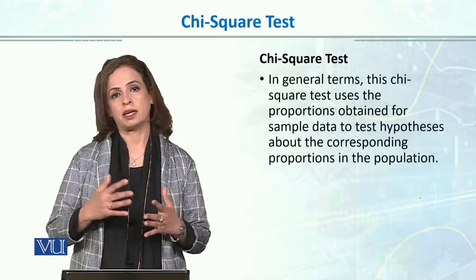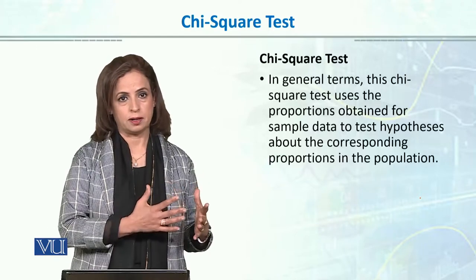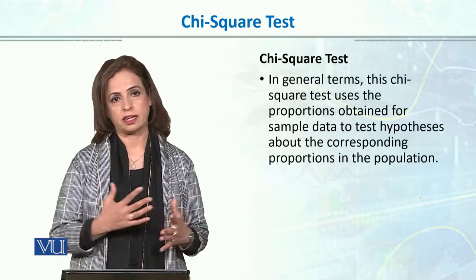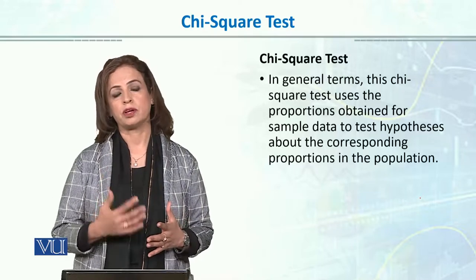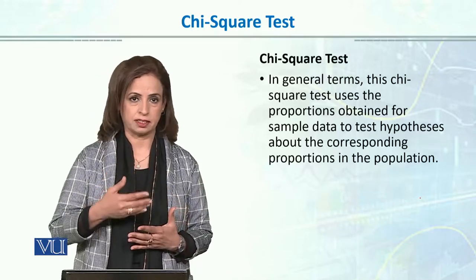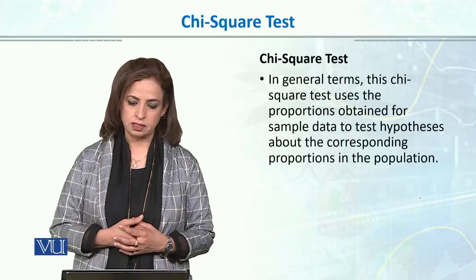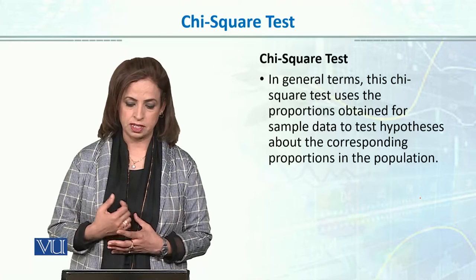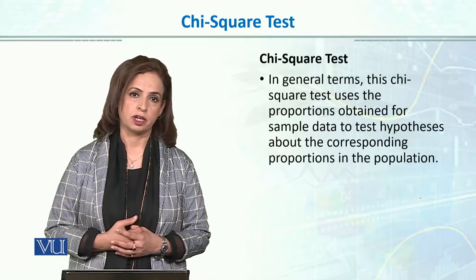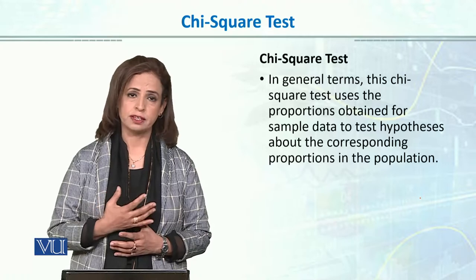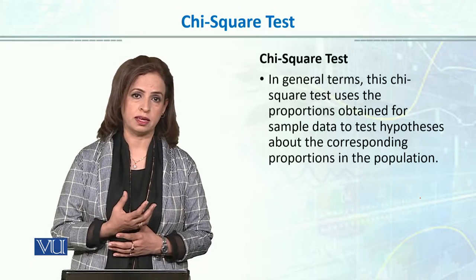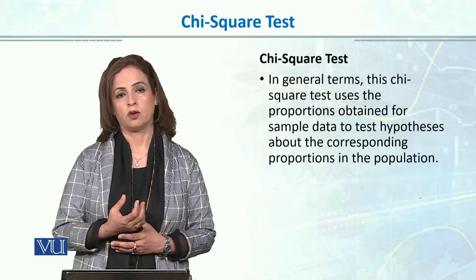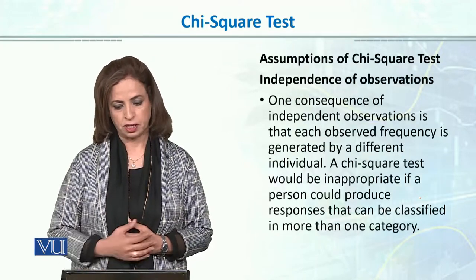And in health, there will be categories such as good health, average health, or poor health, and there will be frequencies — the number of people in each category. In general terms, this chi-square test uses the proportions obtained in the sample data to test hypotheses about the corresponding population. We have proportions in different categories which we compare, and then we test hypotheses about the population.